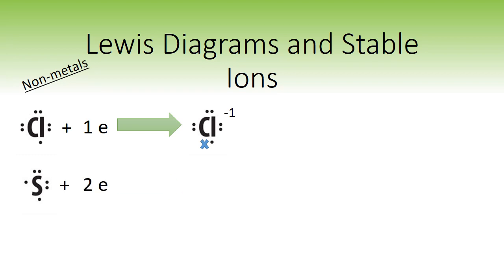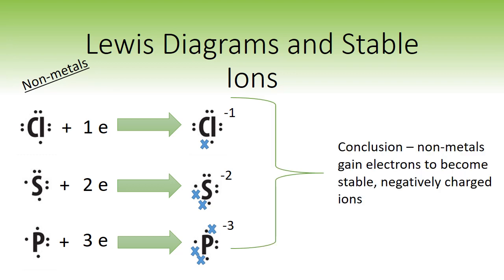Sulfur with 6 valence electrons will want to gain 2 and have a charge of minus 2, and phosphorus with 5 will want to gain 3 and have a charge of minus 3. So we can draw a conclusion: non-metals gain electrons to become stable negatively charged ions, or anions.